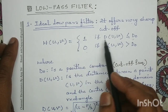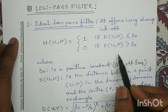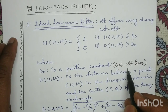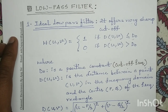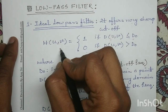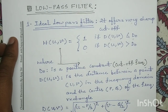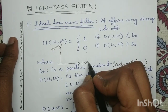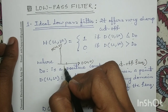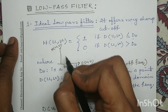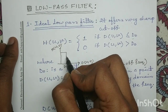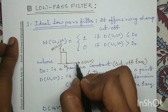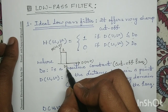The low pass filter passes all frequency components less than or equal to the cutoff frequency, and attenuates all frequency components above the cutoff frequency. If we plot the transfer function with H(u,v) on the y-axis and D(u,v) on the x-axis, with D₀ marked as the cutoff frequency, the ideal low pass filter equals 1 for all D(u,v) ≤ D₀ and drops to 0 for all D(u,v) > D₀.